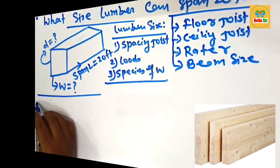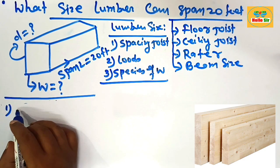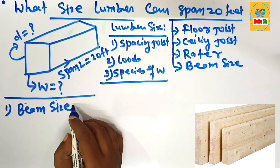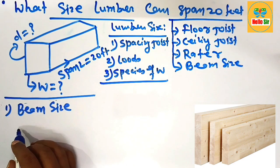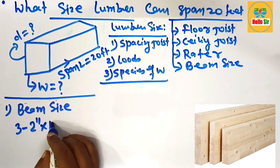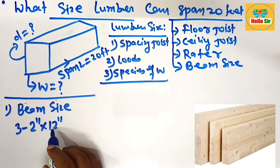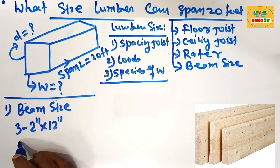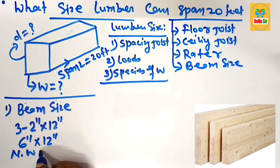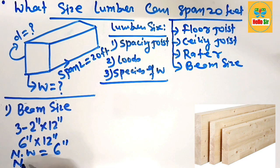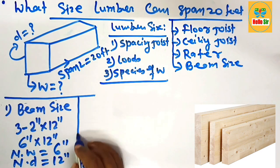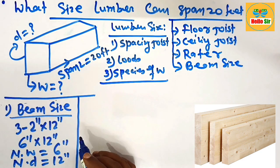For general purposes, first understand what beam size is required to span 20 feet. The beam size required to span is about three pieces of 2-inch by 12-inch dimensional lumber. A wood beam can span 20 feet distance. This can also be written as 6-inch by 12-inch, in which the nominal width is 6 inches and the nominal depth of the beam is about 12 inches.